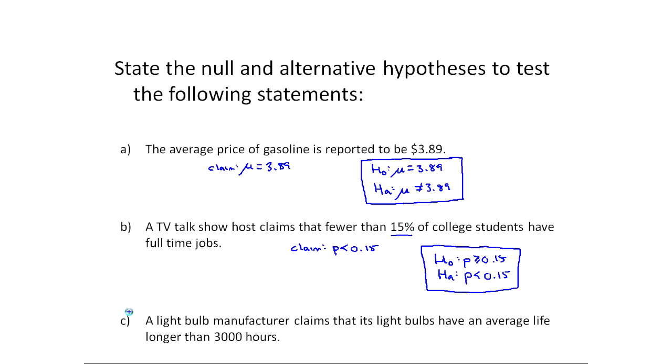Finally for C, it says we claim that light bulbs have an average life longer than 3,000 hours. So the claim is that the mean is more than 3,000. That doesn't have an equality in it, so that's going to automatically be HA. My alternative is the mean is bigger than 3,000. The complement to that would be the mean is less than or equal to 3,000.